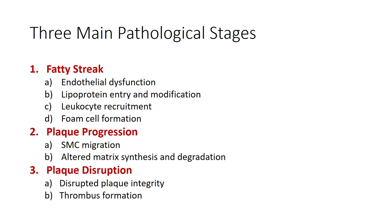There are three main stages of plaque formation: the fatty streak, plaque progression, and plaque disruption. The fatty streak starts with endothelial dysfunction, caused by LDL cholesterol, obesity, or anything affecting nitric oxide balance, making the endothelium activated and prothrombotic. The four key sub-steps to remember are: endothelial dysfunction, lipoprotein entry and modification, leukocyte recruitment, and foam cell formation. You don't need to get too deep into the weeds, but these four steps are the basis of cardiovascular disease pathophysiology.